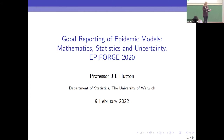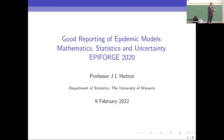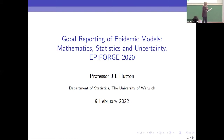I would like to introduce our speaker for this half hour: Jane Hutton, Professor Jane Hutton from the University of Warwick. Jane is a British medical statistician and her research interests include meta-analysis, survival analysis, and ethics in mathematics. She has participated in highly cited studies on autism and cerebral palsy. Jane, over to you to talk about good reporting of epidemic models, mathematics, statistics, and uncertainty.